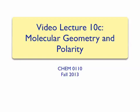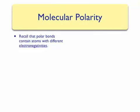Video Lecture 10c: Molecular Geometry and Polarity. In the previous chapter we discussed how bonds can be polar. A bond between two atoms can be polar if their electronegativities are very different. This will result in an unequal sharing of electrons, and the electron density will be higher around the atom that is more electronegative.